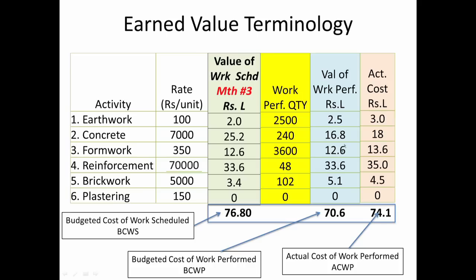A similar comparison of value of work performed versus actual cost shows where variances are occurring. In this case, brickwork has actually yielded more value than was spent. But in almost all other cases, we have spent marginally more than the value of work done. We might want to look at the package level, analyze why this is happening, and take control actions.